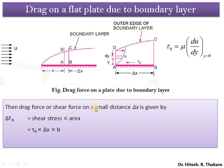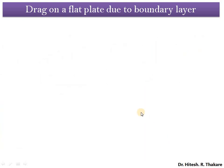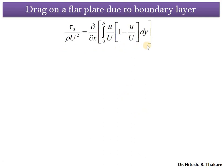The drag force or shear force for that small distance delta_x is calculated as the product of shear stress and the area on which it acts: it equals tau_0 × delta_x × B, where B is the width of the plate perpendicular to the plane of the paper. According to the momentum principle — Newton's second law — this drag force must be equal to the rate of change of momentum for that particular distance delta_x.